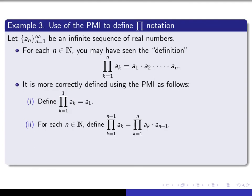The more correct inductive way of defining the partial product is by defining the partial product of a_k, k from 1 to 1, to be simply the first term. Then, the partial product from 1 up to n+1 is defined to be the partial product from 1 to n multiplied by the very last term, a_{n+1}. That is the inductive way of defining this product notation, denoted by pi.